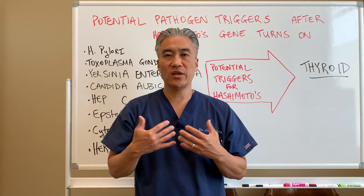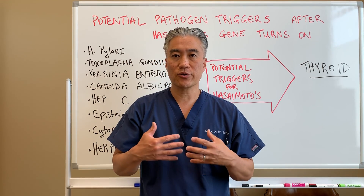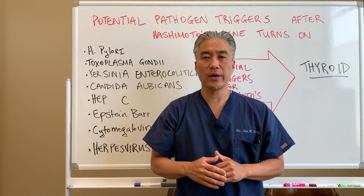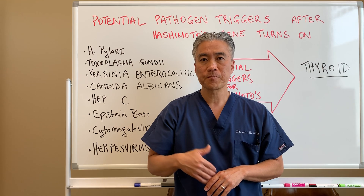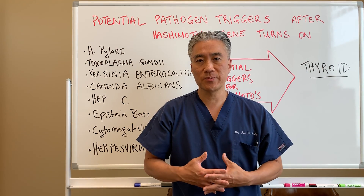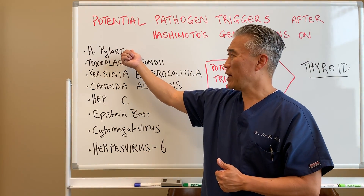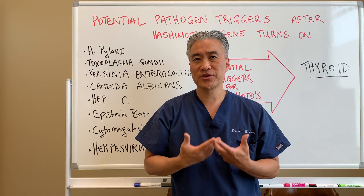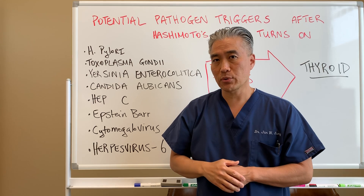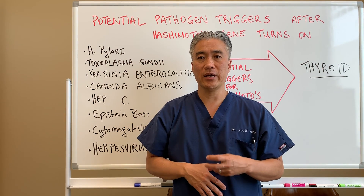When we look at different pathogens, there are very common ones and not so common ones that can create triggers for Hashimoto's thyroiditis. Number one is H. pylori, or Helicobacter pylori. This is a very common infection of the upper GI tract and it can create symptoms of GERD or gastric reflux disease. So when you have reflux signs, indigestion, or persistent cough especially at night, you may actually have H. pylori, and if you have Hashimoto's thyroiditis, it could potentially create an additional trigger.